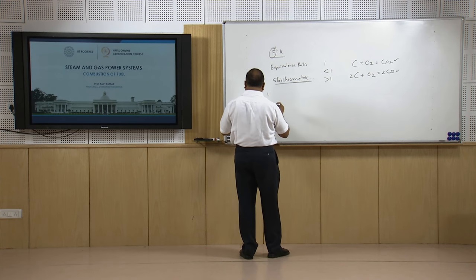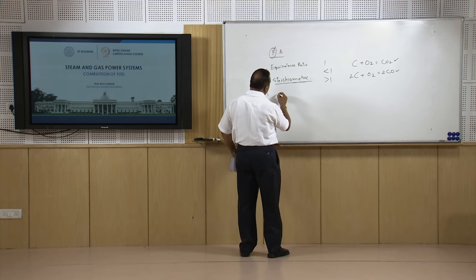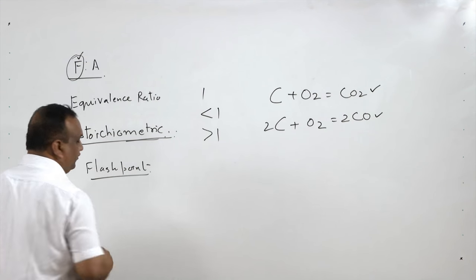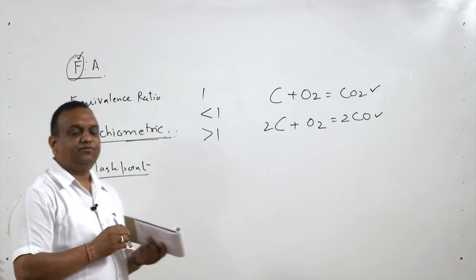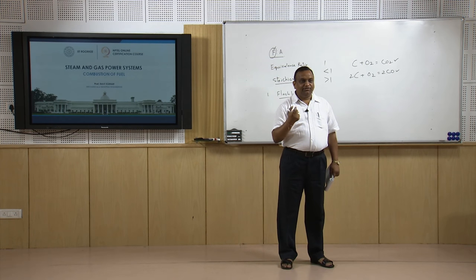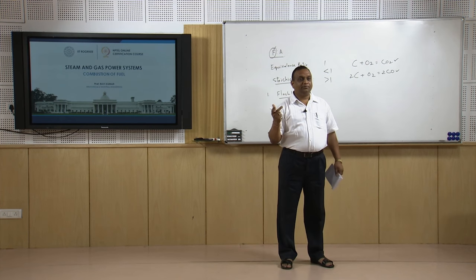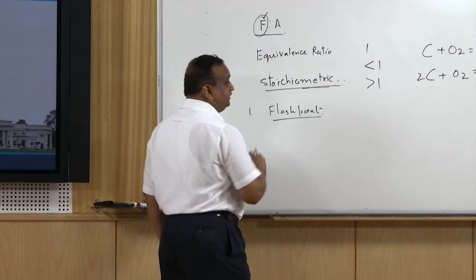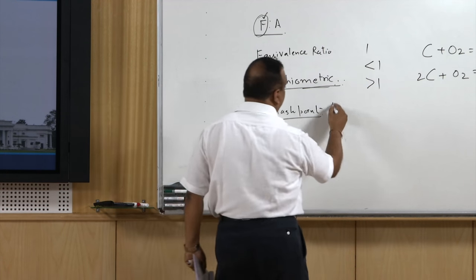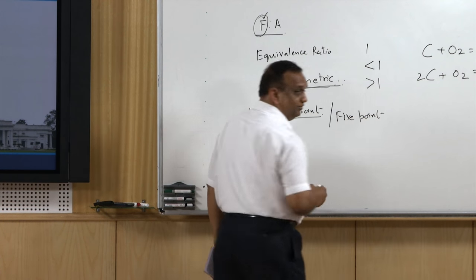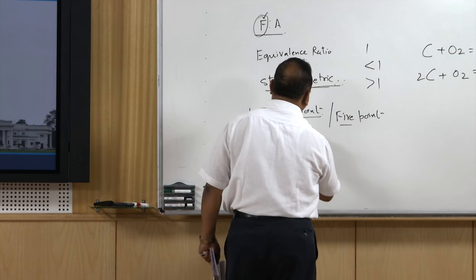Another characteristic of the fuel is flash point. Flash point is the temperature at which, if we start increasing the temperature of the fuel, vapors are generated — these vapors are volatile. An initial spark burns the vapor, but combustion is not sustained at the flash point. In fire point, combustion is sustained. So fire point is definitely higher than the flash point.